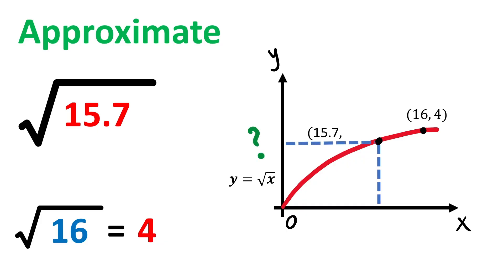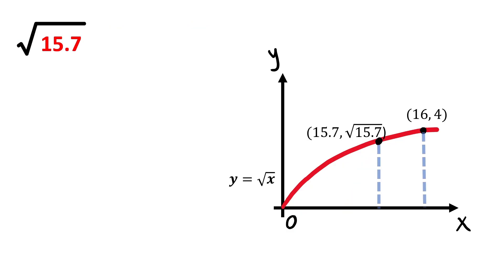We need to find the value of y for this x, but it will be the same as the square root of 15.7. So we know these two points now. The change in the value of x is very small and it is 0.3 in the negative direction.